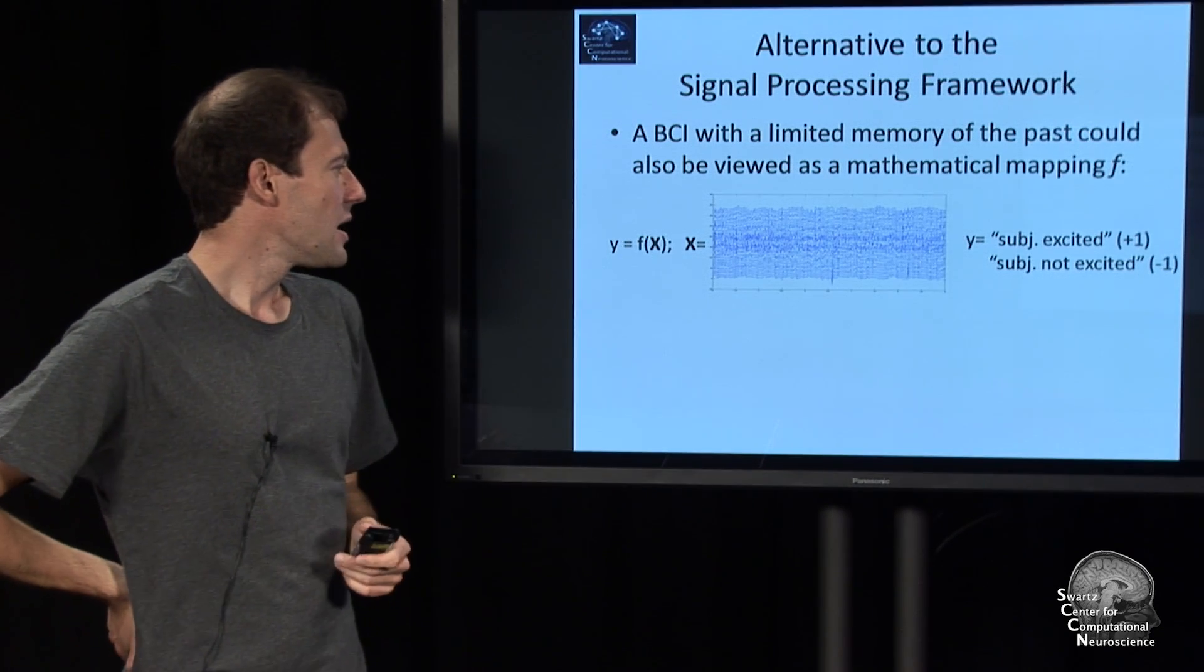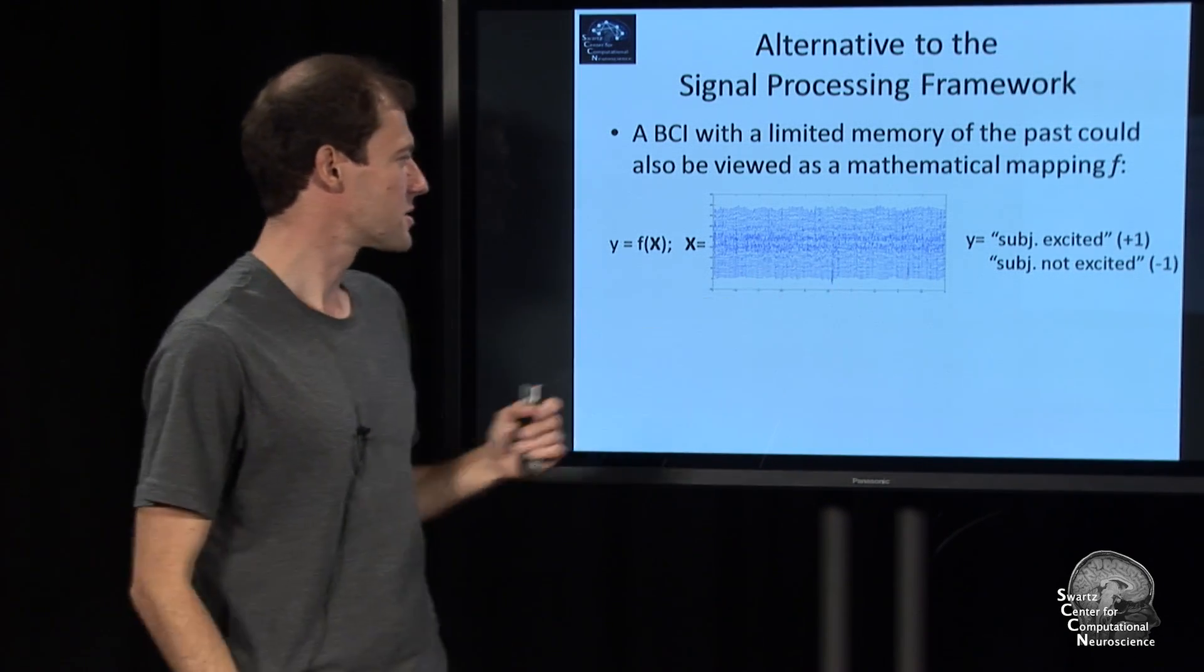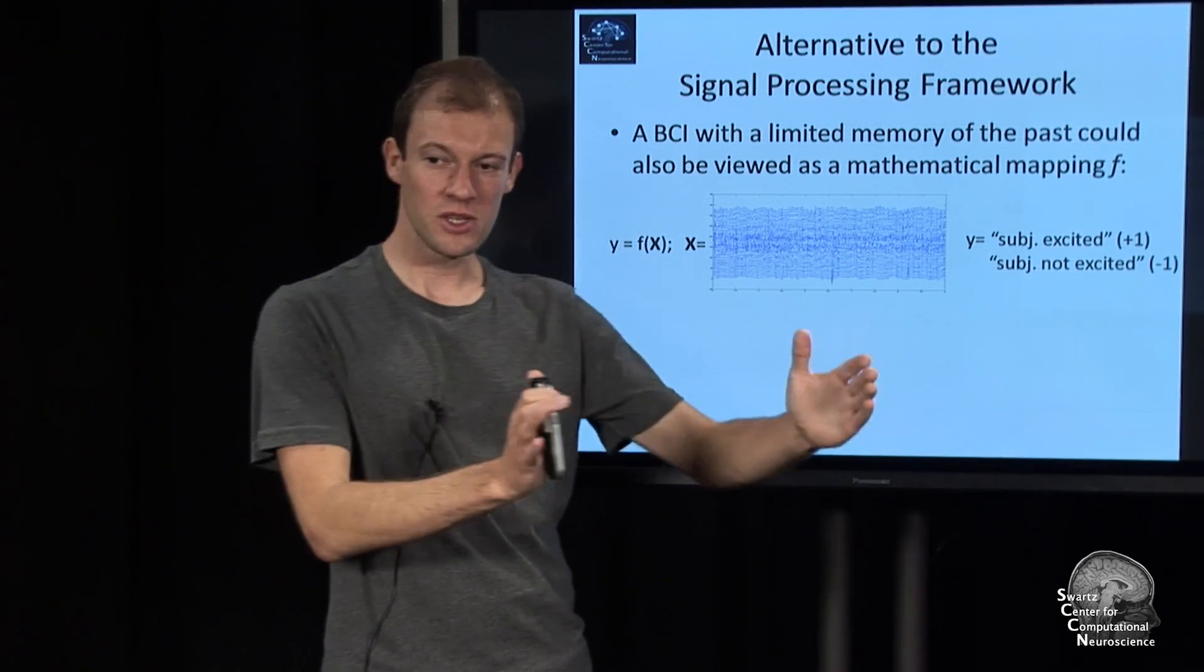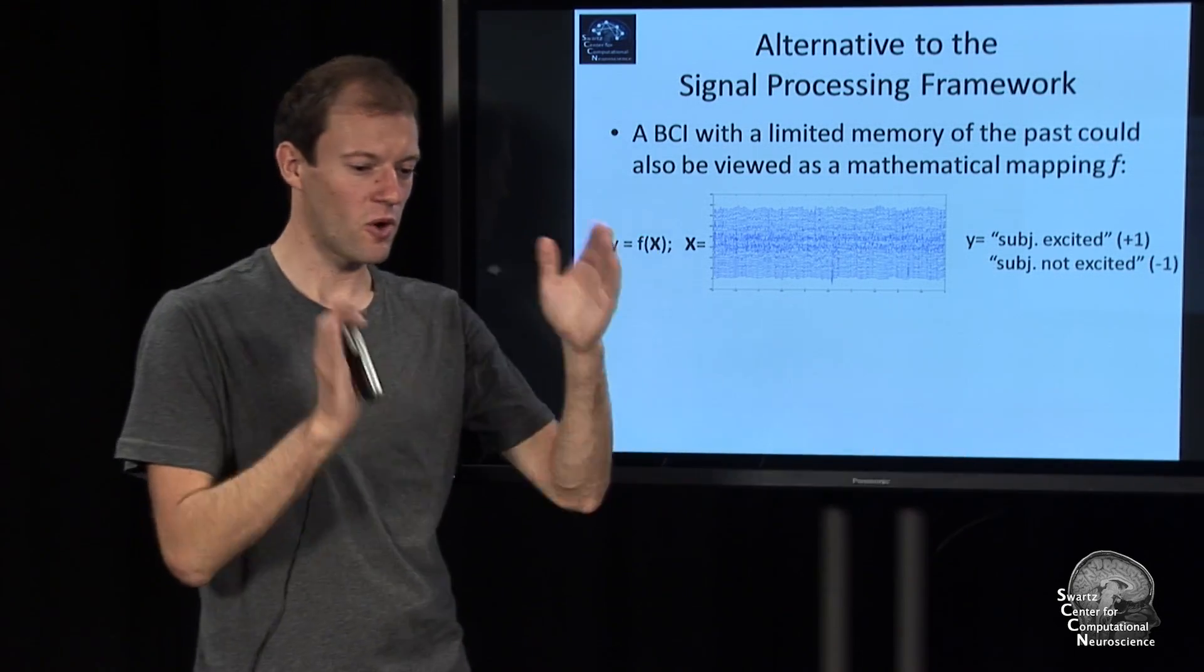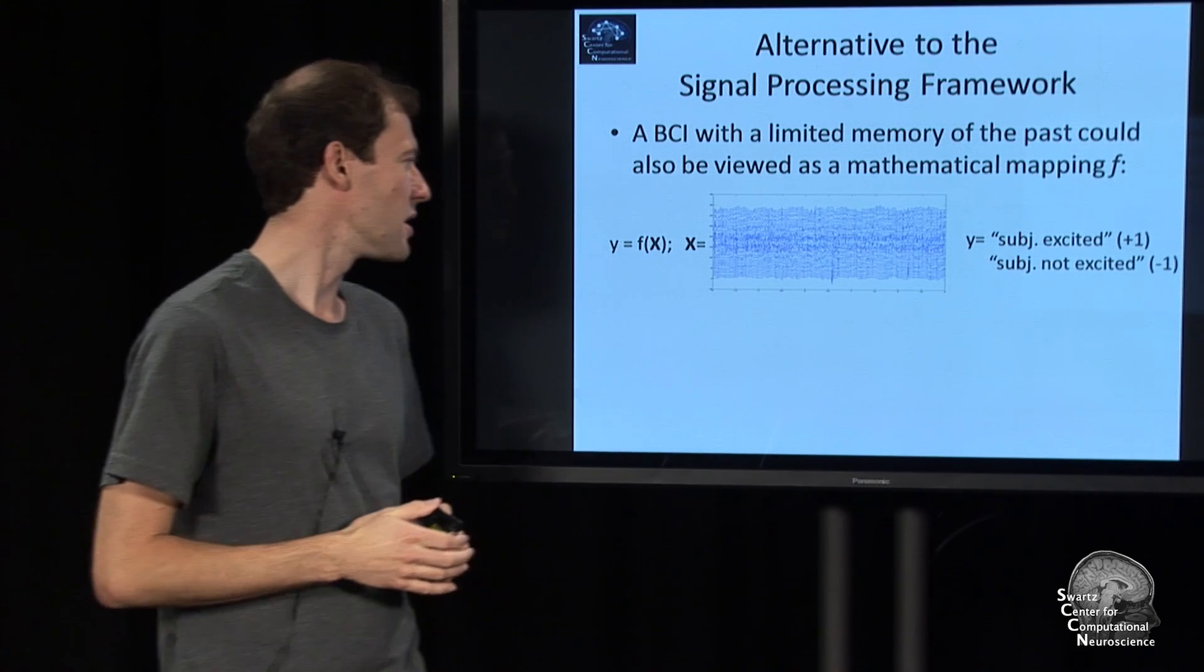The history length is basically the size of this matrix. To apply this, you sort of slide it over the EEG and always query it at a particular time when you're interested in the output.